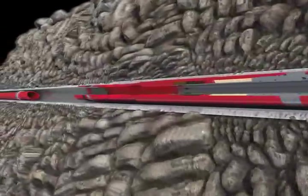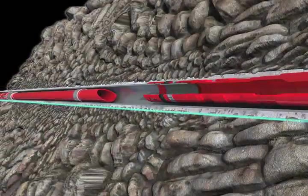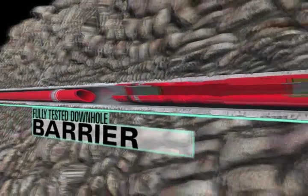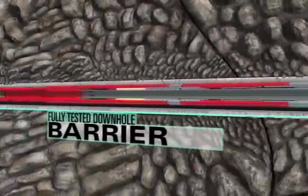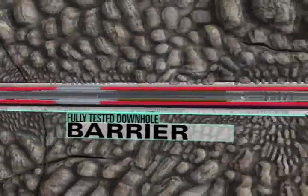The upper completion can now be installed while the FS Valve remains in a fully closed position within the lower completion, isolating the formation and providing a fully tested downhole barrier.